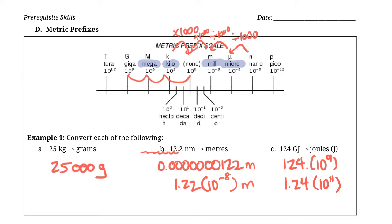So the answer is 1.24 × 10 to the 11 joules. Giga is an important one to know, especially since we often see gigajoules in physics. These prefixes are something you should be able to recall without looking at a chart — practice the middle ones especially.